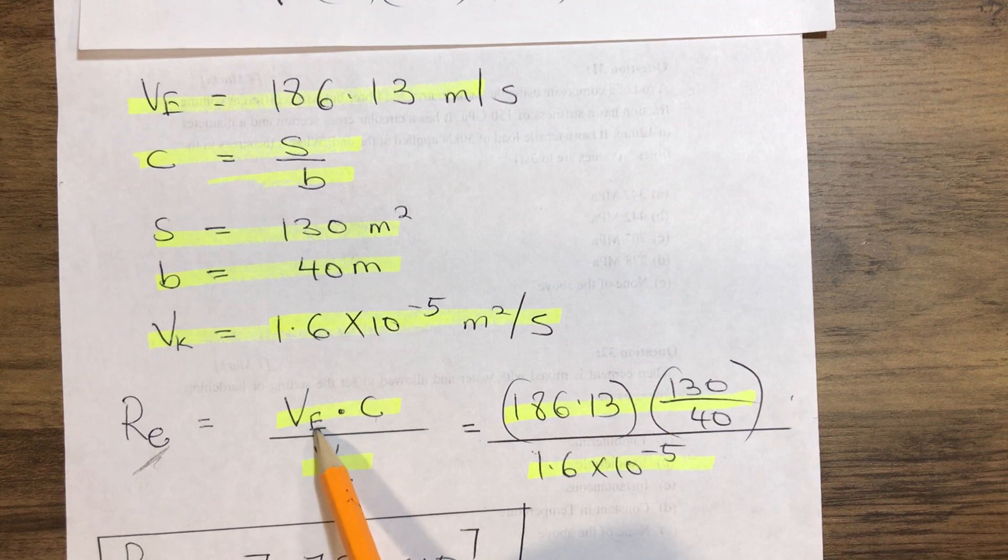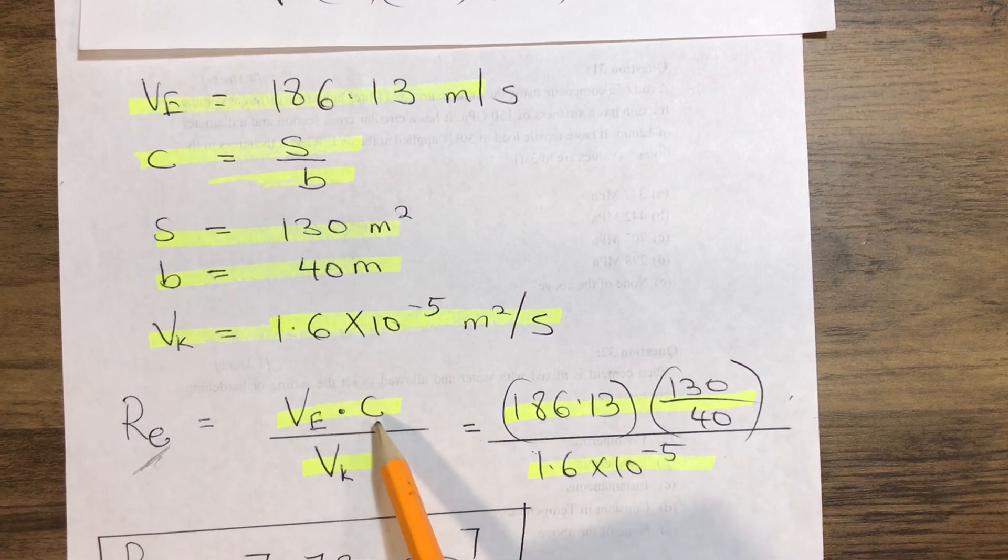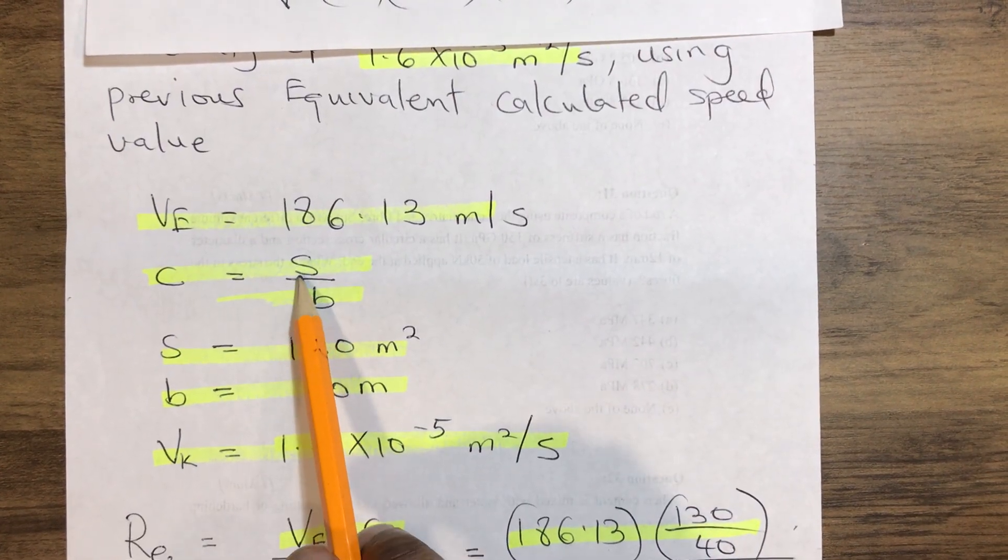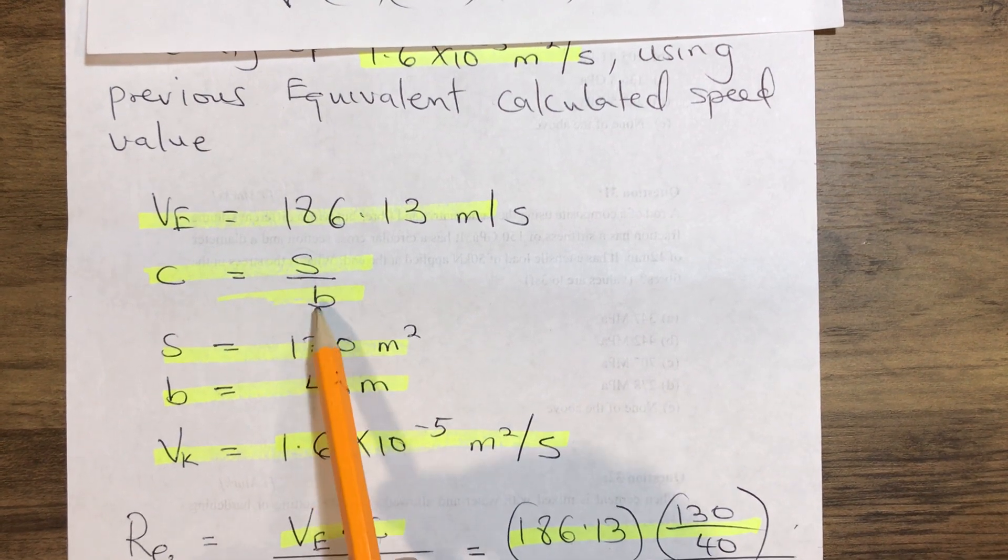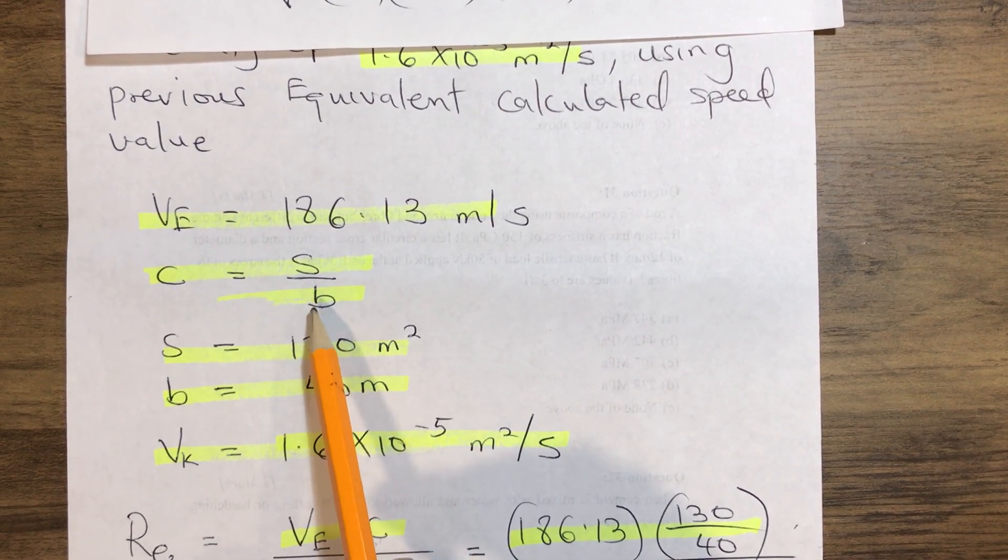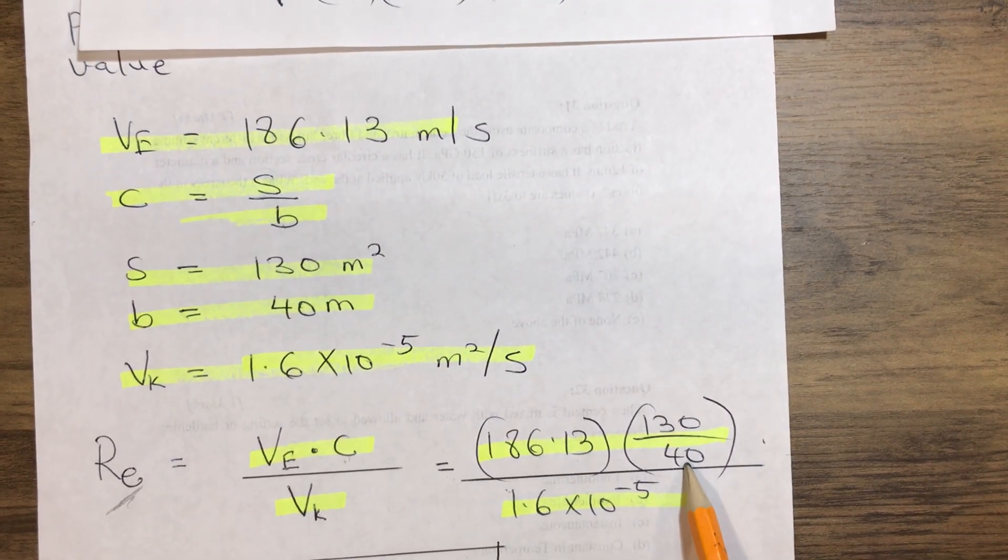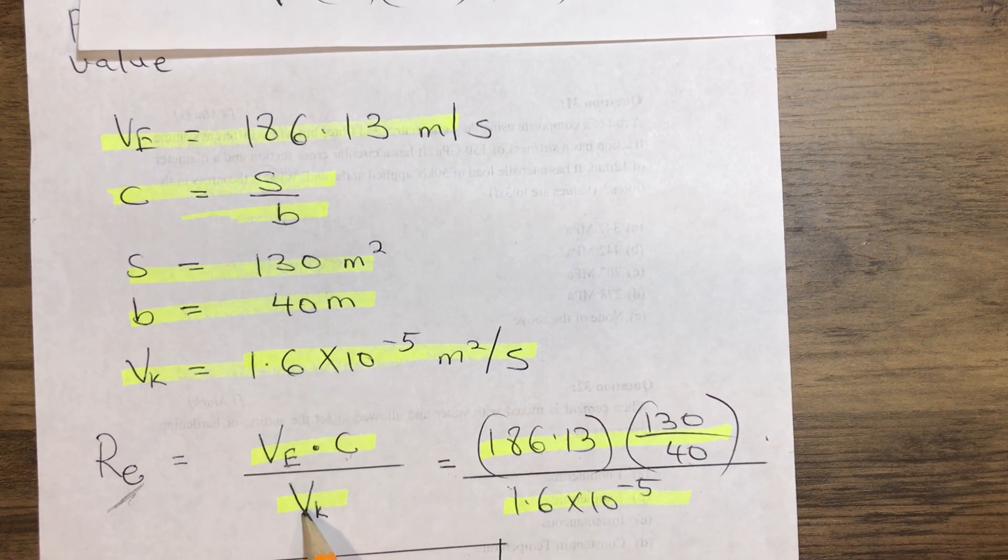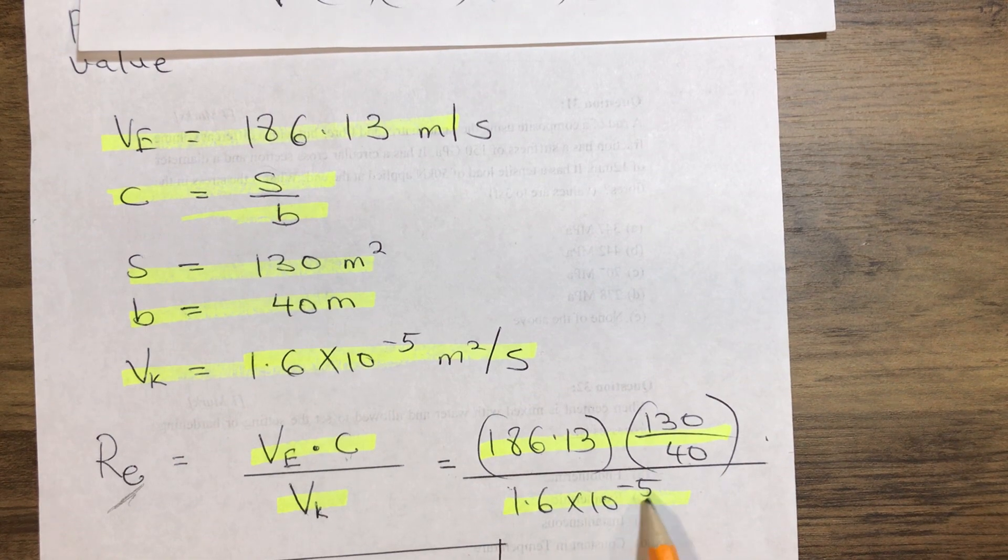So that gives us our VE which is 186.13 multiplied by our chord. Our chord equals the area of the wing of our aircraft over the span. So that gives us 130 over 40 over our kinematic viscosity which is 1.6 times 10 to power minus 5.